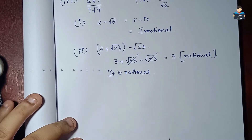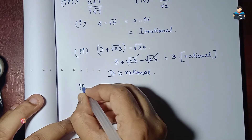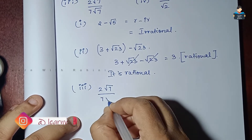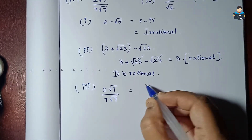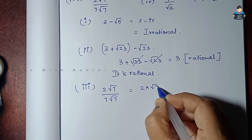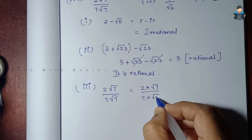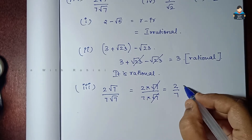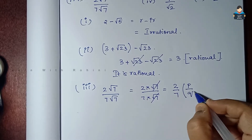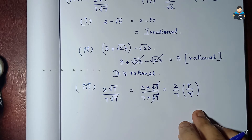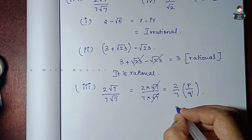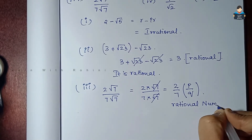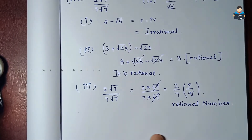Third subdivision: 2√7 divided by 7√7. Here we simplify: 2 × √7 over 7 × √7. The √7 cancels, giving 2/7. This is of the form p/q, so the answer is rational.